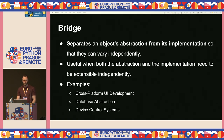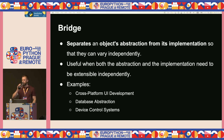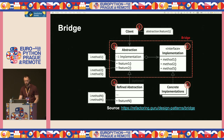Another structural pattern is Bridge. The Bridge pattern separates an object's abstraction from its implementation so that they can vary independently. It's useful when both abstraction and implementation need to be extensible independently. Use cases include cross-platform development, database abstraction supporting different database types, and device control systems.